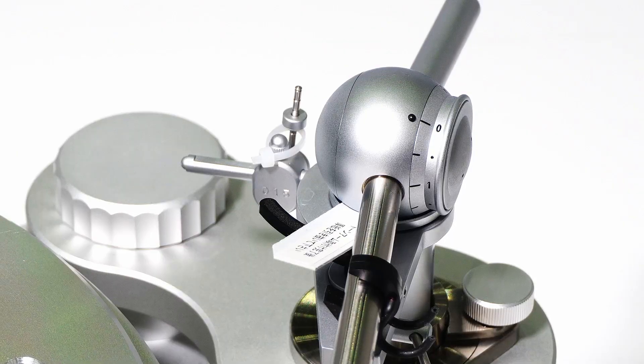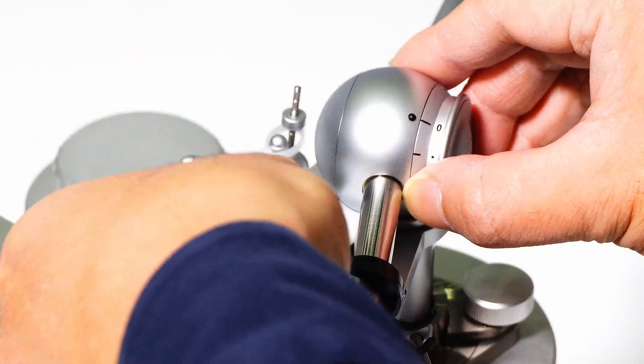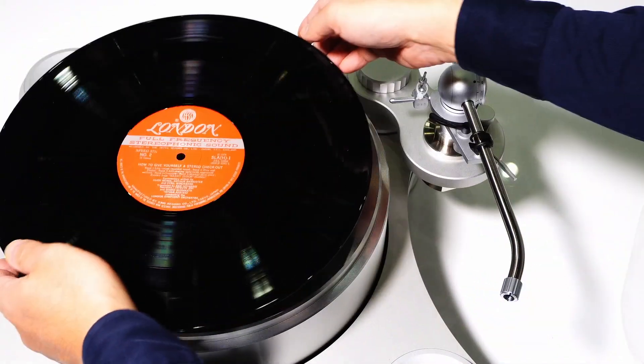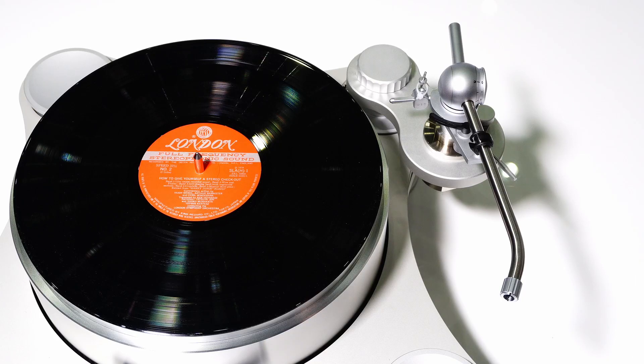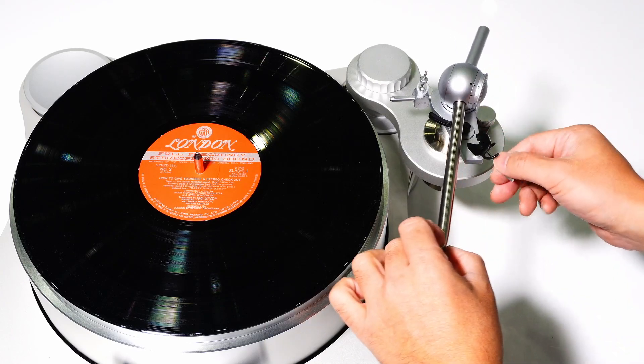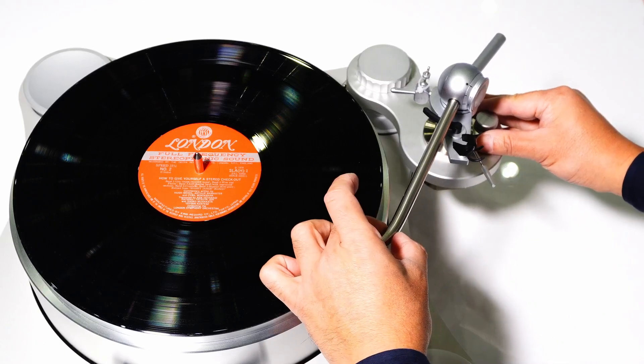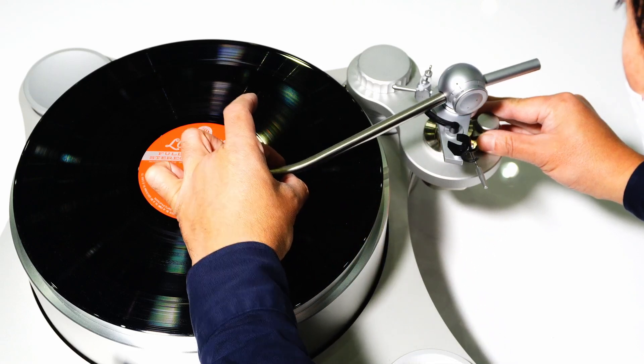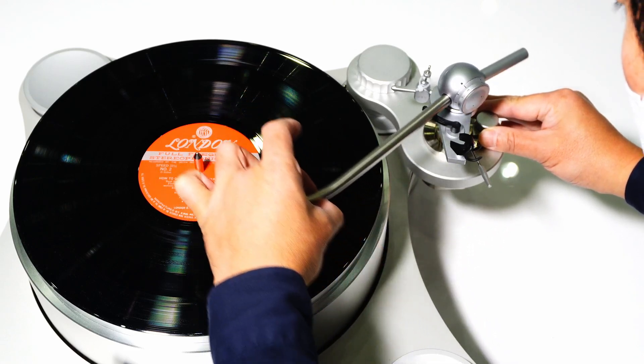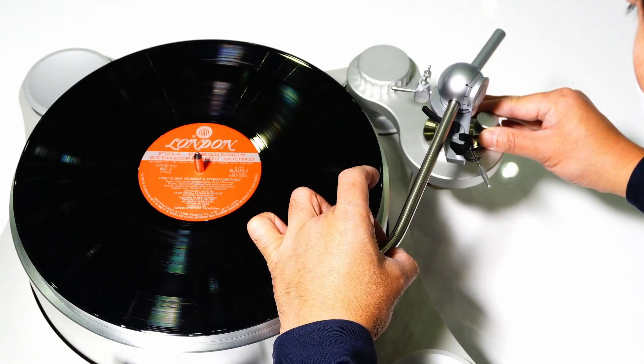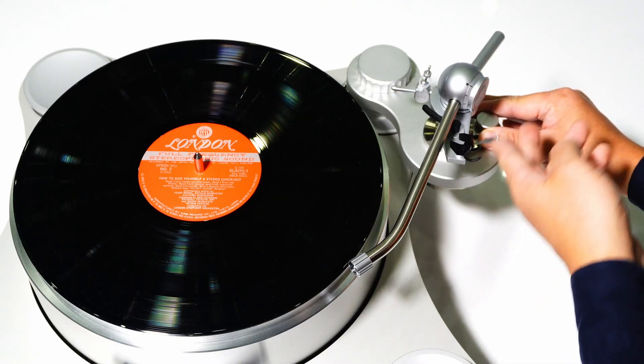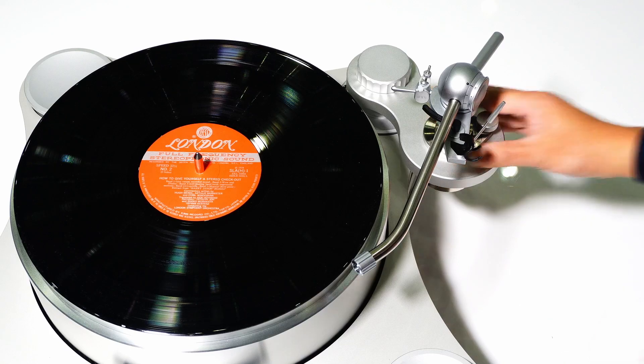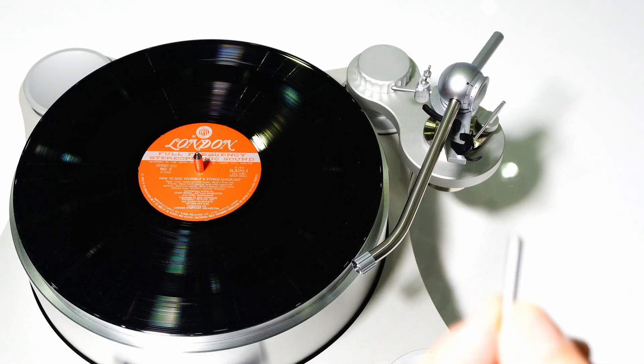Remove the bearing protector. Now adjust the tonearm angle. Check the tonearm travel range by manually operating the tonearm from the first track to the last track. Also make sure that the arm lifter works within its travel range. Screw in the nut firmly by using the supplied pins.